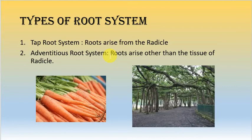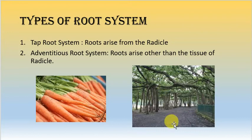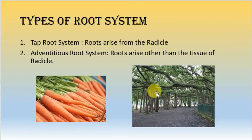The adventitious root system could arise from the tissue of the leaf, the stem, or the node or internode — but it cannot arise from the radicle. The carrot root is an example that arises from the radicle tissues of the embryo. The banyan tree shows adventitious roots which arise from the stem nodes.